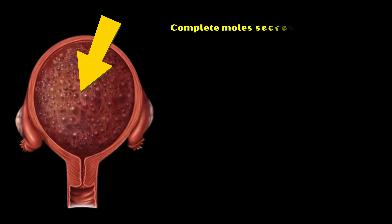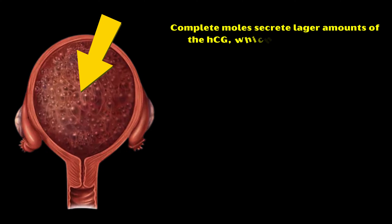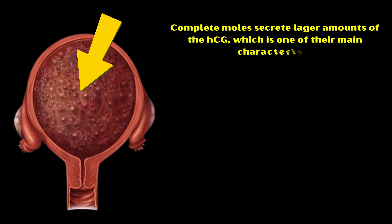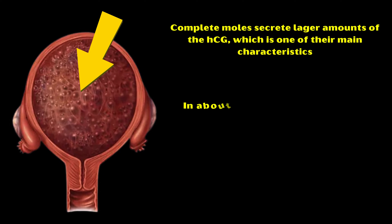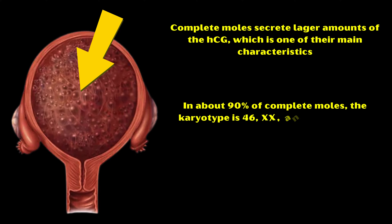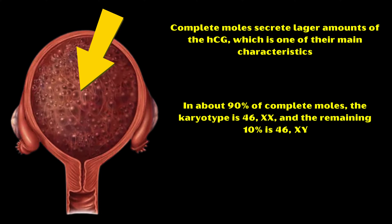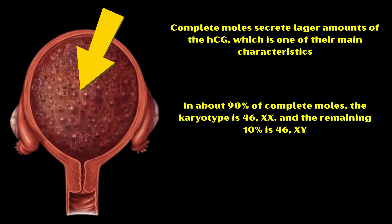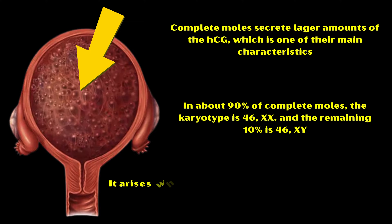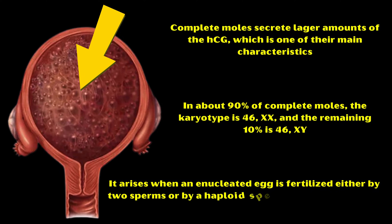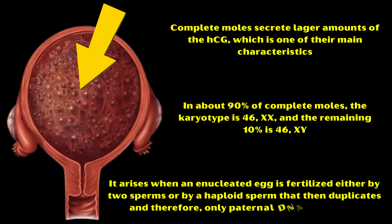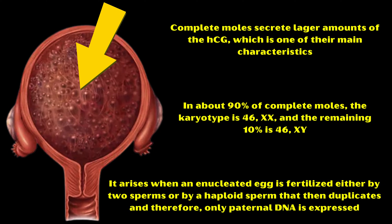Complete moles secrete larger amounts of human chorionic gonadotropin, or HCG, which is one of their main characteristics. In about 90% of complete moles, the karyotype is 46XX and the remaining 10% is 46XY. It arises when an enucleated egg is fertilized either by two sperms or by a haploid sperm that then duplicates, and therefore only paternal DNA is expressed.